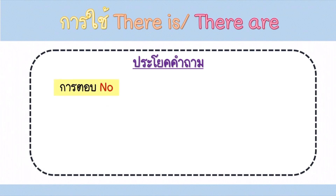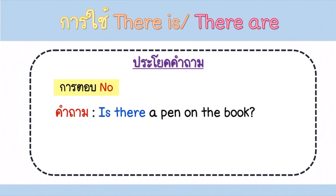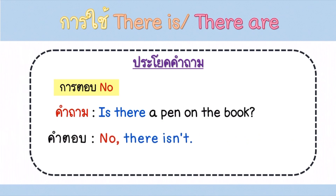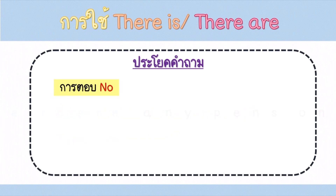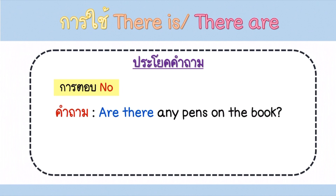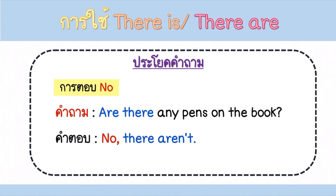การตอบ No แปลว่าไม่ค่ะ ถ้าถามว่า Is there a pen on the book? มีปากกาหนึ่งด้ามอยู่บนหนังสือไหม ถ้ามีตอบ Yes, there is แต่ถ้าไม่มีตอบว่า No, there isn't ค่ะ เป็นการปฏิเสธว่าไม่มีปากกาอยู่บนหนังสือ อีกตัวอย่าง Are there any pens on the book? ถ้าไม่มีก็ตอบว่า No, there aren't แปลว่าไม่มีปากกาอยู่บนหนังสือเลย